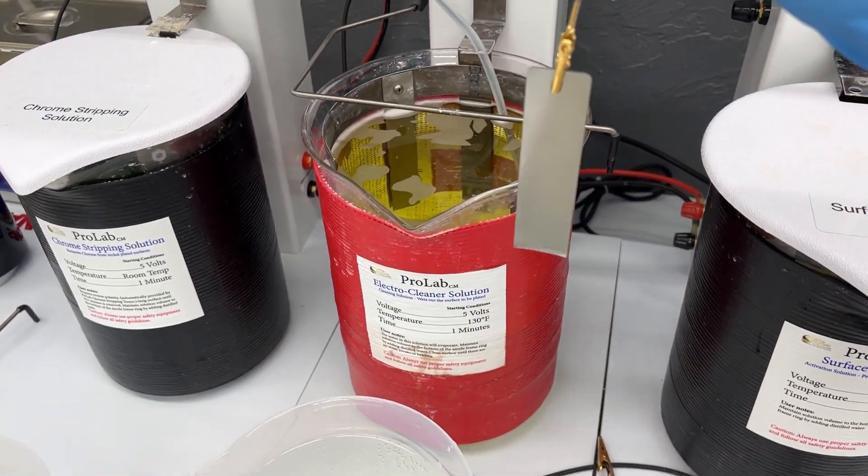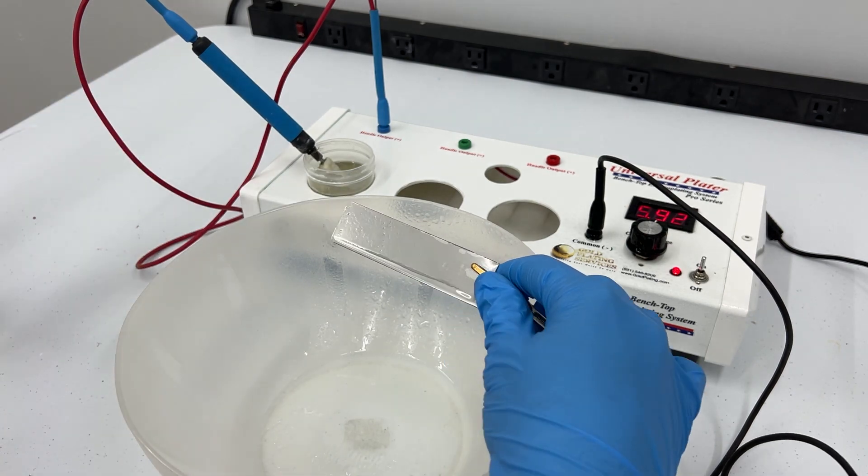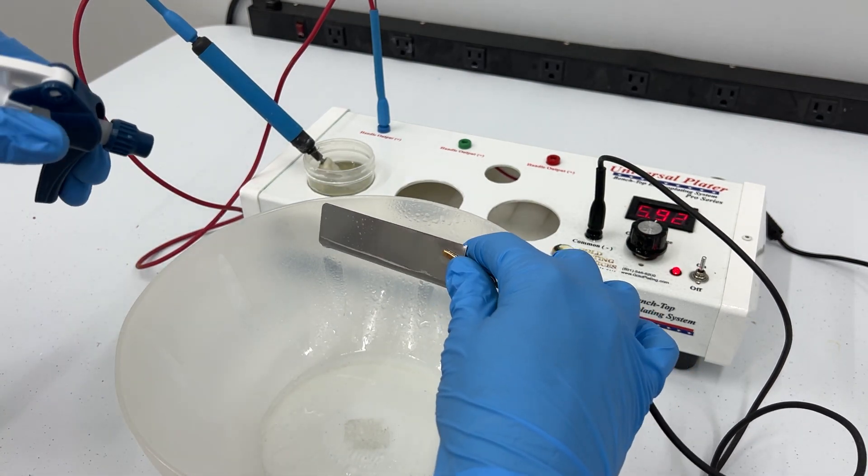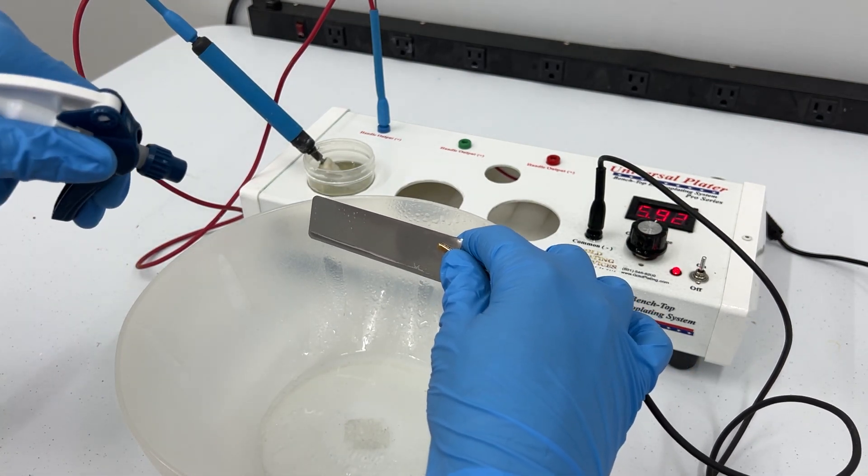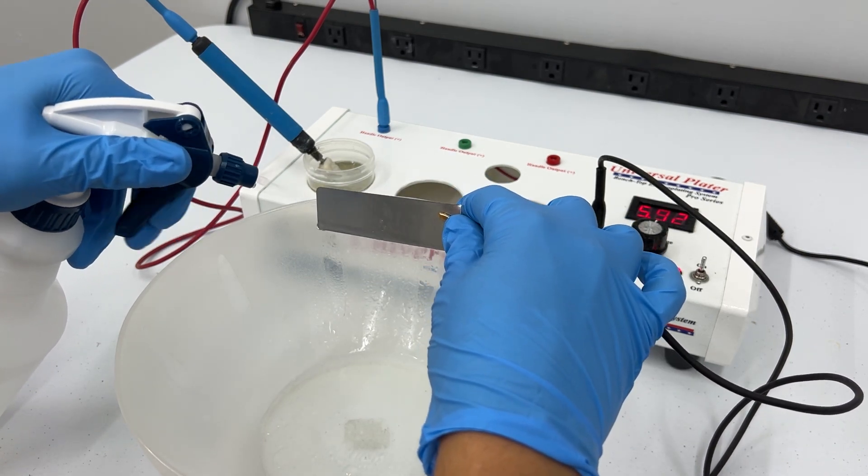With brush plating, make sure that you are rinsing off your item completely with either a rinse beaker or a spray bottle filled with distilled water. This makes sure there are no residues left on an item when continuing plating.